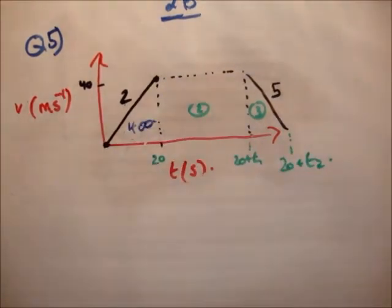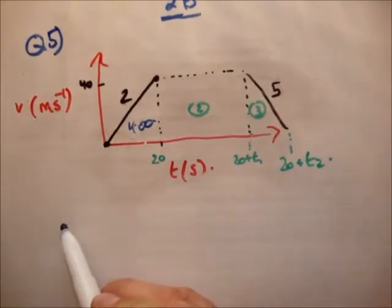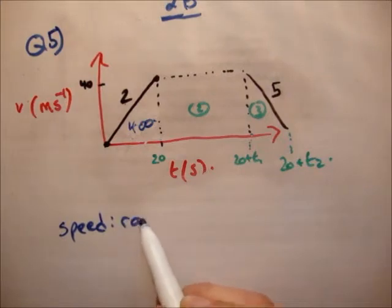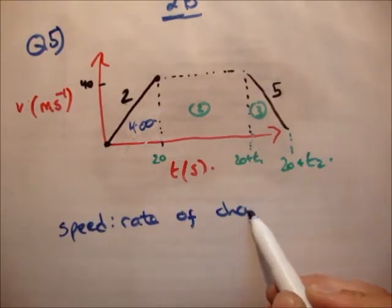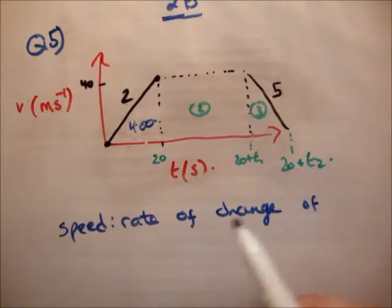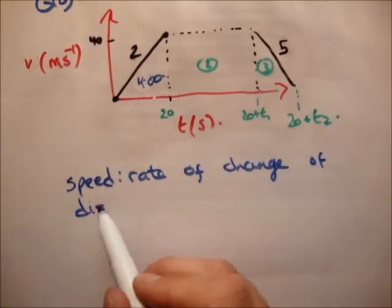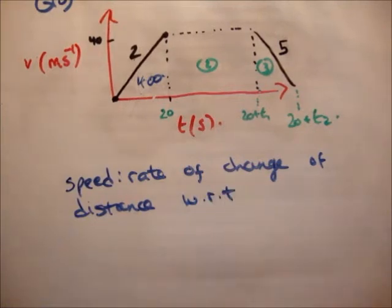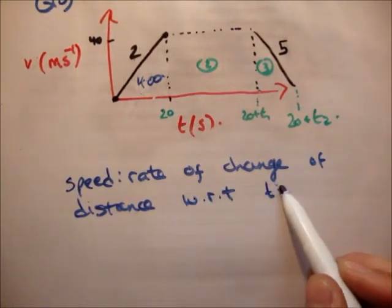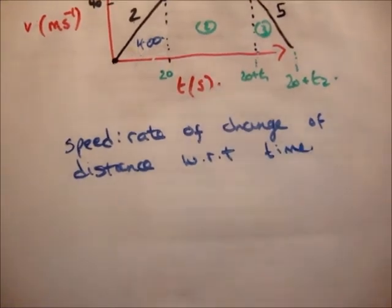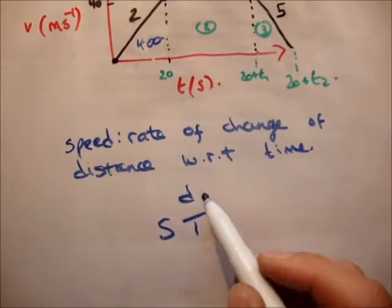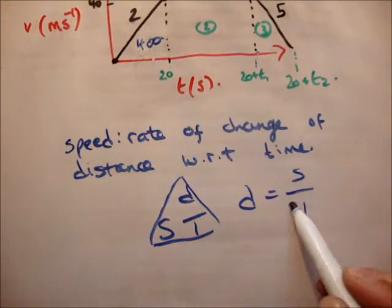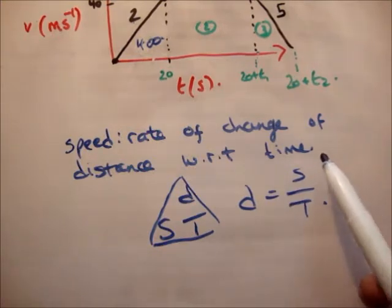First of all, just very quickly, what is speed? It is a rate of change of distance with respect to time — WRT means with respect to time. How do you know that? Because look, if we look at our formula, distance is equal to speed over time.